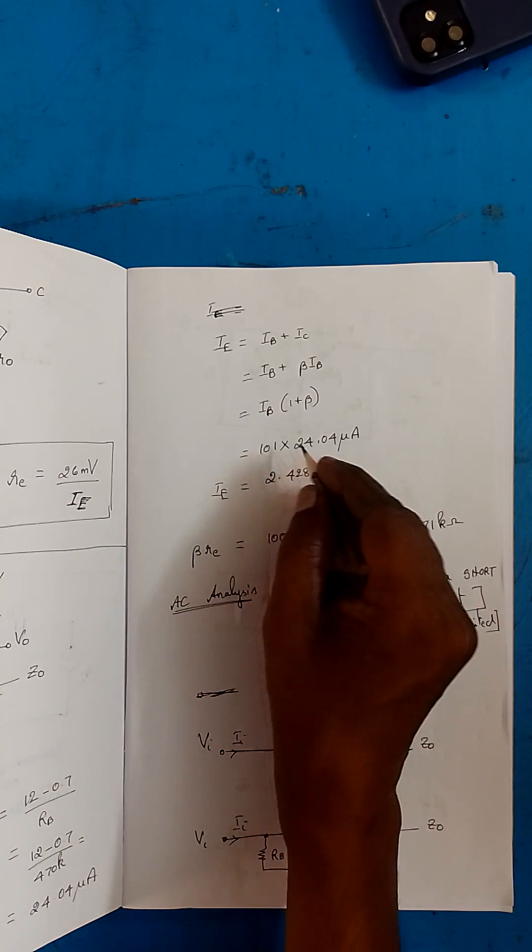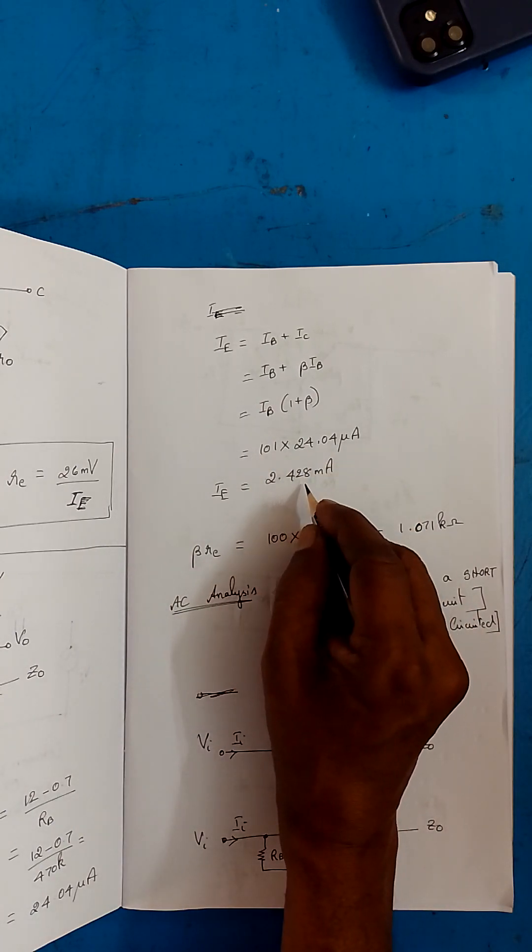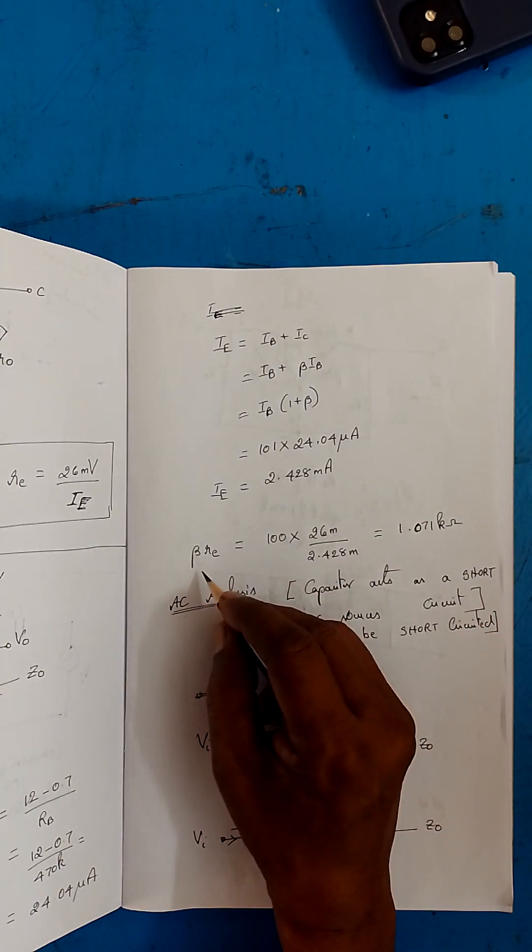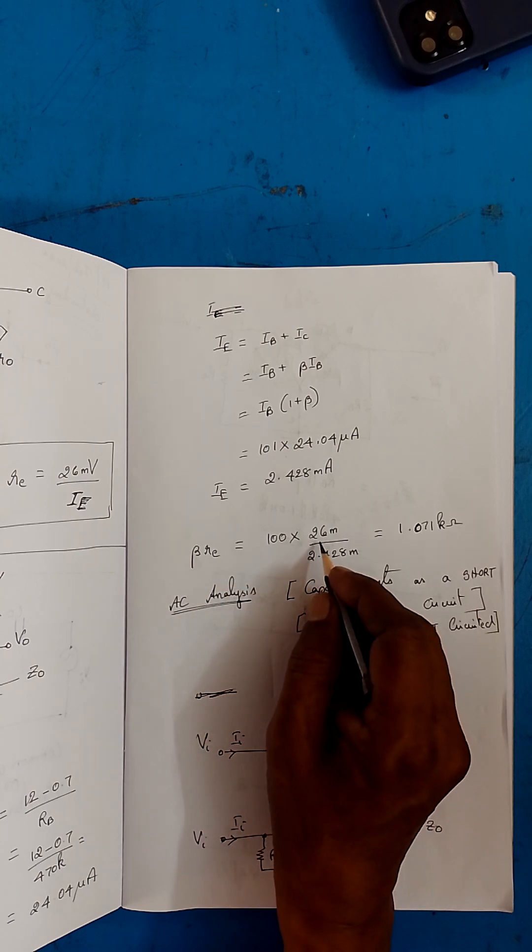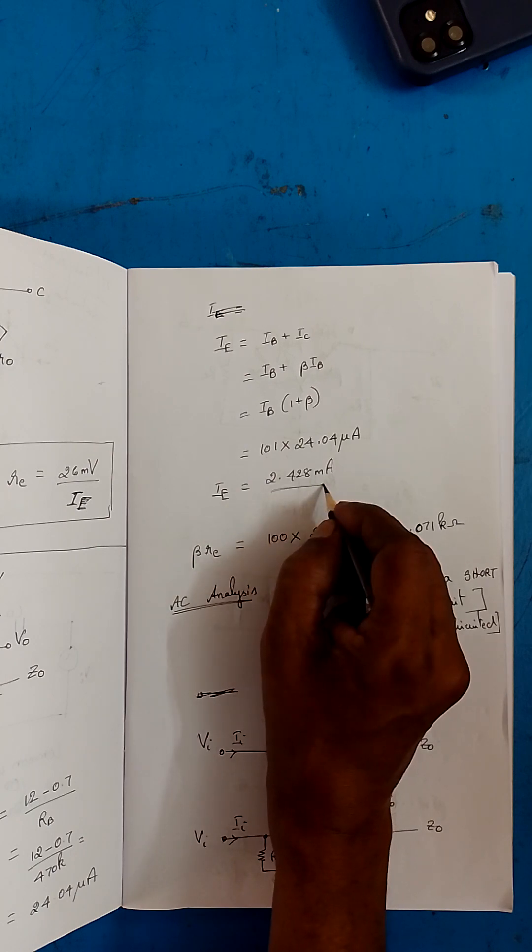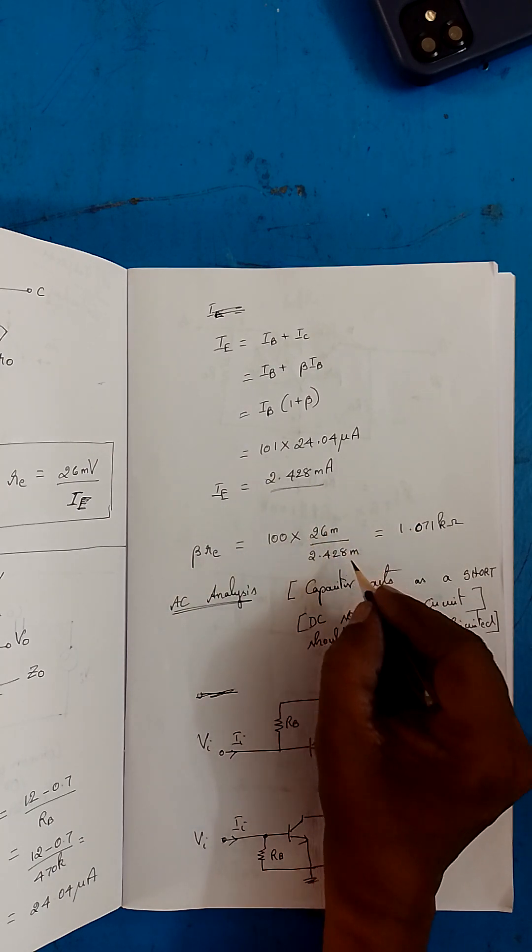Now we need beta re. Beta is given in the question itself as 100. re we already told you is 26 millivolts by IE. IE value we just found. This is constant for room temperature. So you will be getting 1.071 kilo ohms.